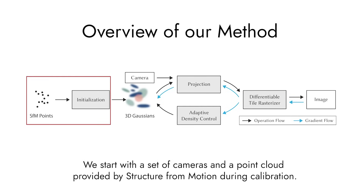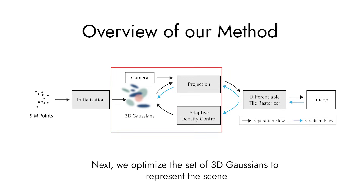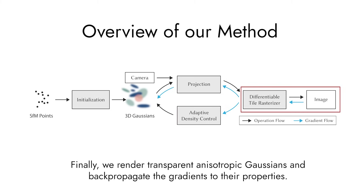We start with a set of cameras and a point cloud provided by structure from motion during camera calibration. Next, we optimize a set of 3D Gaussians to represent the scene. Finally, we render transparent anisotropic Gaussians and back-propagate their gradients to their properties.